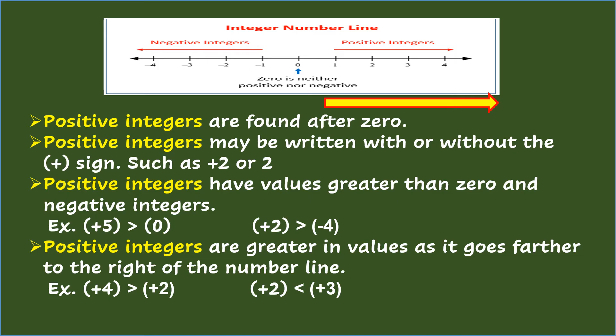Integers can be best studied using the integer number line. On positive integers: Positive integers are found after 0. Positive integers may be written with or without the positive sign, such as +2 or 2. Positive integers have values greater than 0 and negative integers.